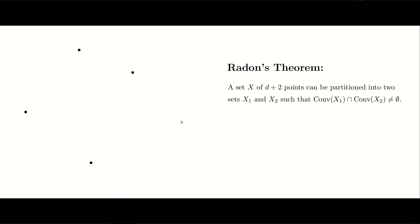Finally, we look at three important theorems in this area. The first one is Radon's theorem, which says if you have a set of d plus two points in d-dimensional space, then you can partition them into two sets such that their convex hulls are intersecting. In the plane, this theorem holds for four points, since d plus two equals four in two-dimensional space. For example, given the following shape, you can partition the points into two sets, and as you can see, the convex hulls have a common point. I will not prove this theorem.